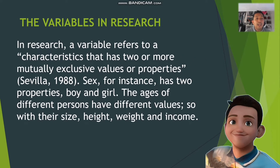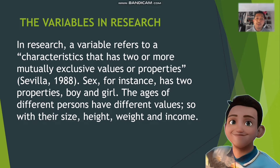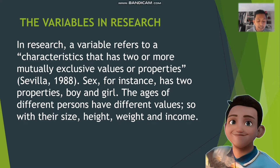Let's start. In research, a variable refers to a characteristic that has two or more mutually exclusive values or properties. For example, sex has two properties: boy and girl. The ages of different persons have different values, as do their size, height, weight, and income. This variety is what makes life interesting and is one of the motivating factors of research.